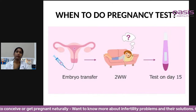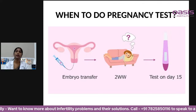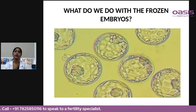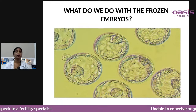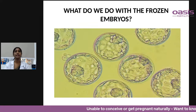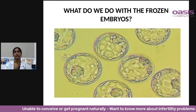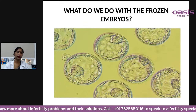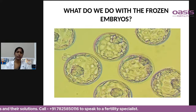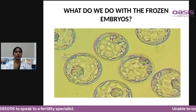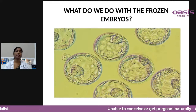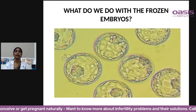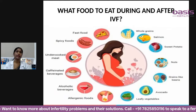The pregnancy blood test is done 12 to 14 days, or maximum 15 days, after embryo transfer to confirm pregnancy. Regarding frozen embryos: if the first embryo transfer fails, you can try again using the frozen embryos without restarting from step one. If pregnancy is achieved and extra embryos remain, they can be used for a second or third pregnancy years later. Once frozen, embryos can stay in liquid nitrogen in the same condition for months and years.